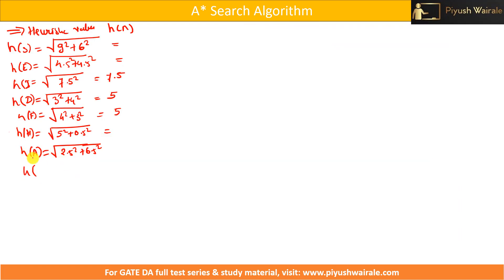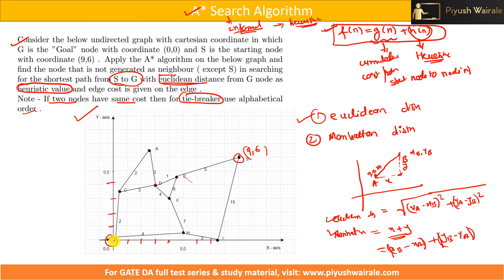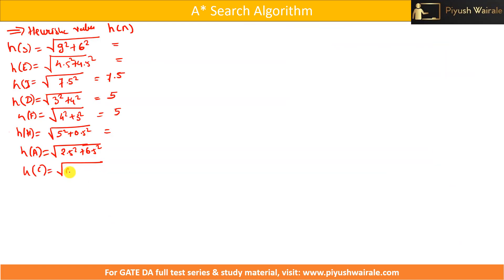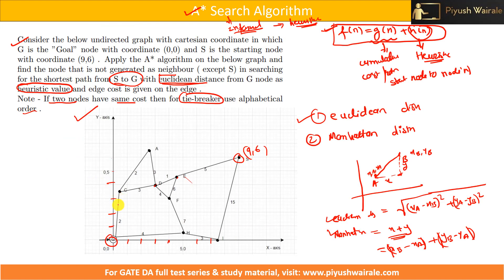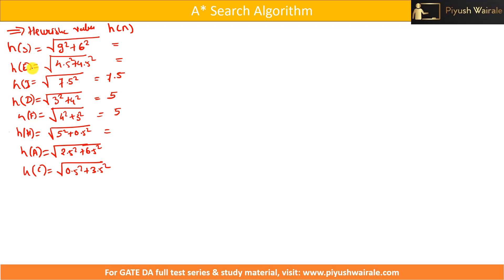h(C) is the square root of 3.5² + 3.5², which gives 3.54. Now doing the calculations: h(s) = square root of 6² + 9² = 10.81, h(E) = 6.36, h(I) = 7.5, h(D) = 5, h(F) = 5, h(H) = square root of 2.5² + 6.5² = 6.94, h(C) = 3.54. We have calculated the heuristic value for each and every node.